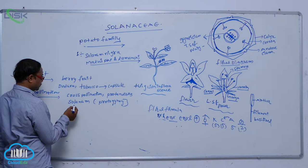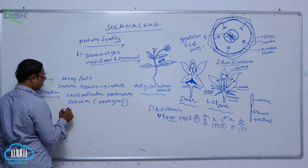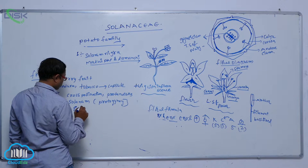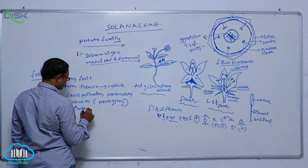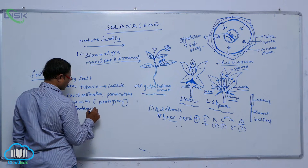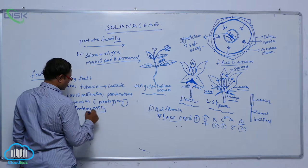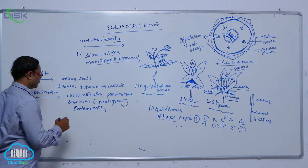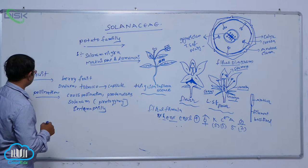It is a cross-pollination. It is a solanum. Generally, cross-pollination takes place by the insects, entomophily.